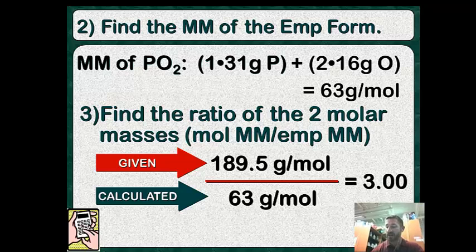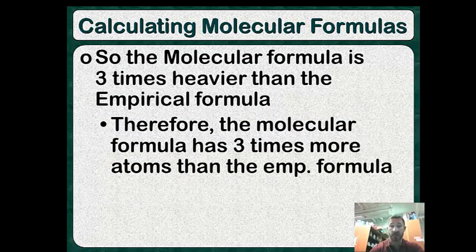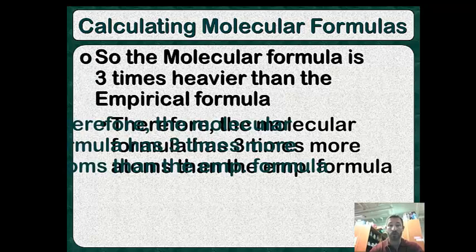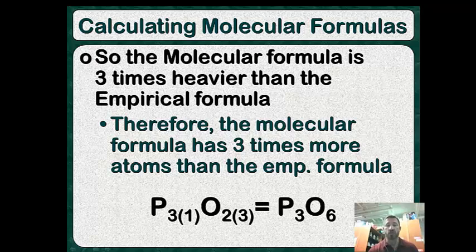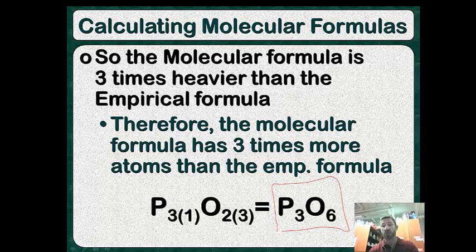We get a ratio of 3, meaning the molecular formula is 3 times the empirical formula. So instead of PO₂, we have P₃O₆. The molecular formula has 3 times more atoms than the empirical formula. And that's it — this is how you do molecular formula problems. Good luck.